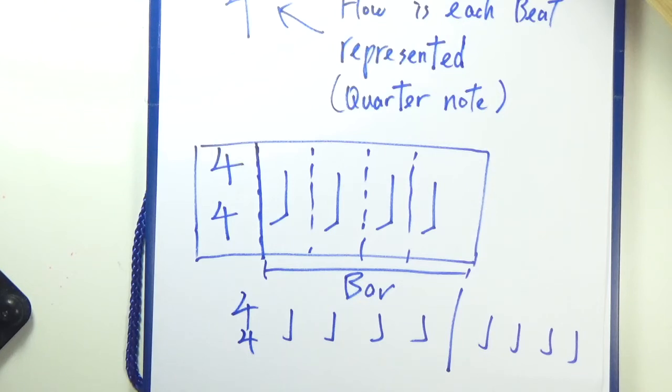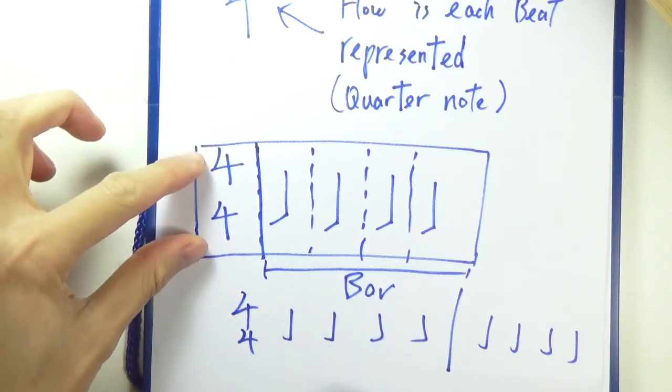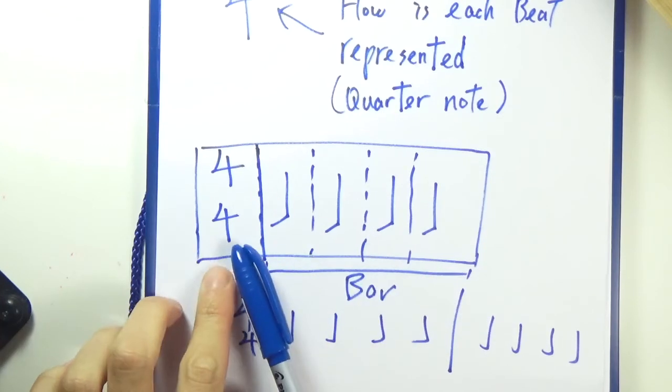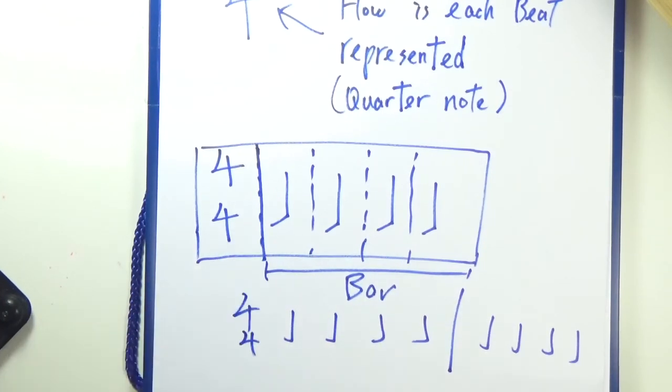So 4/4 means there are four beats and each beat is represented by a quarter note. Hope it makes sense. Don't worry, we'll get to key signatures and we'll talk about different kinds of key signatures in depth there. For now, just get a rough idea of how things work here and you should be good.